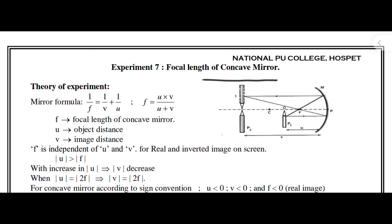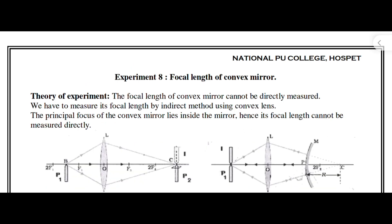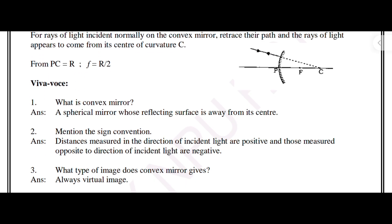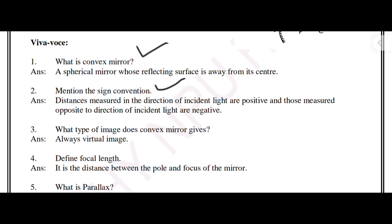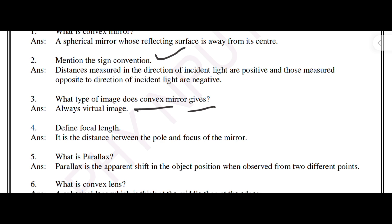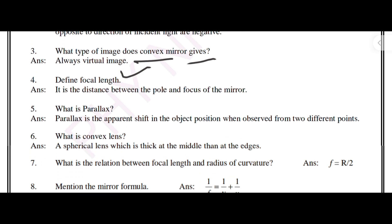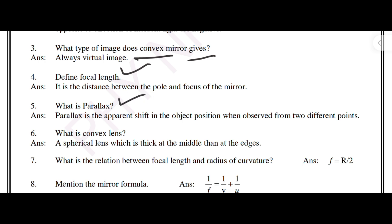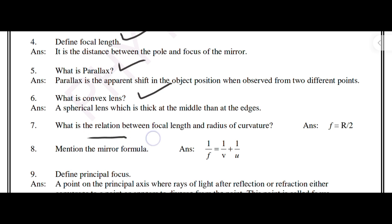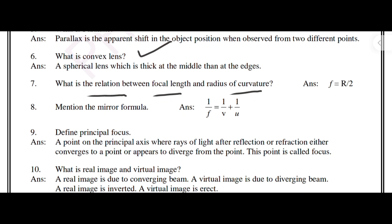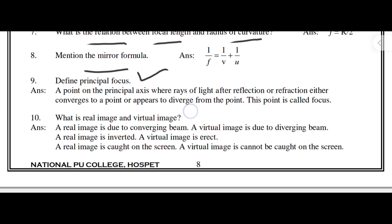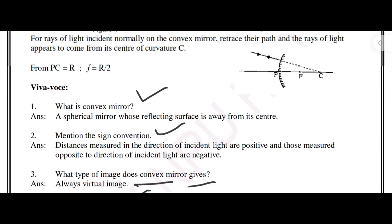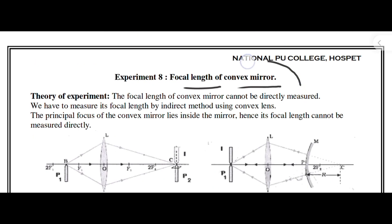Next is the experiment on focal length of a convex mirror. The VIVA questions are: what is a convex mirror; mention the sign convention; what type of image does a convex mirror give; define focal length; what is parallax; what is a convex lens; what is the relation between focal length and radius of curvature; define the mirror formula; define principal focus; what is a real image and a virtual image?